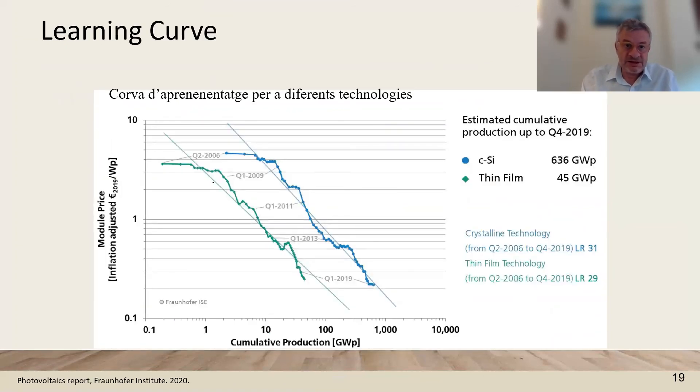And this is the historical evolution of thin film and crystallized silicon of the prices with respect to the cumulative production. This is the learning curve of the decrease of the price when the production of the photovoltaic technologies is increased.